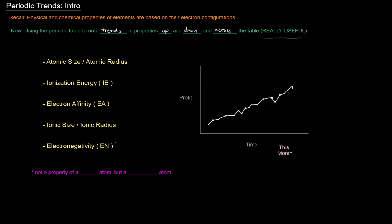You'll notice next to electronegativity I have a little asterisk there, and the reason why is that electronegativity is not a property of a standalone or single or solo atom, instead it's a property of a bonded atom. And that's a distinction we'll get into later.